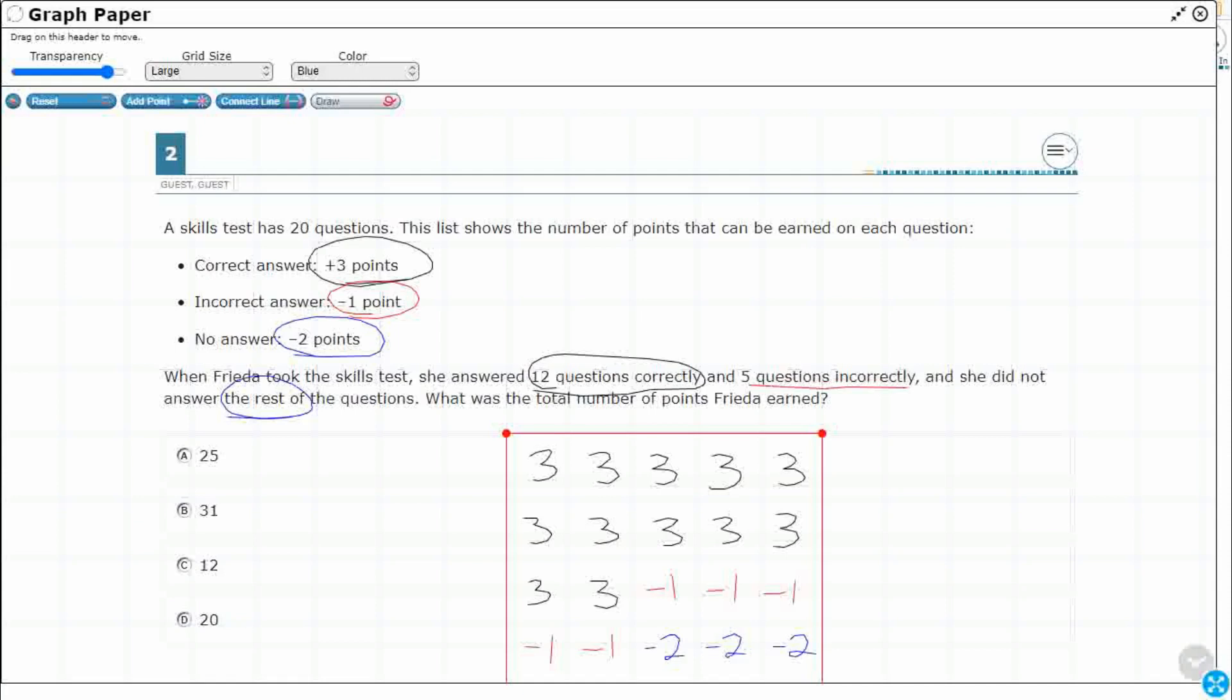So let's see if we can do this in chunks here. I'll use green. So first, let's figure out what this is. So I've got 12, and that's worth a positive 3. So that's worth 36. So starting with 36 points.